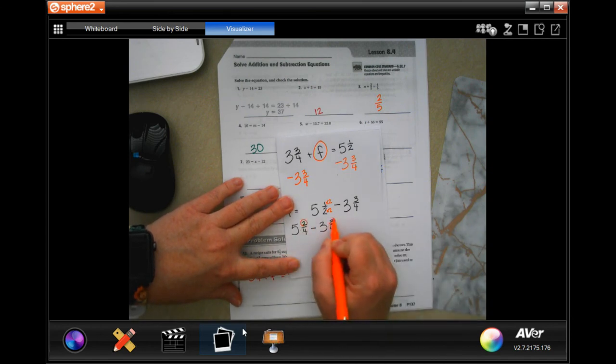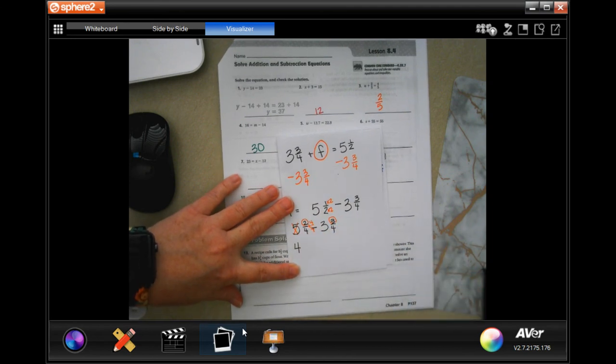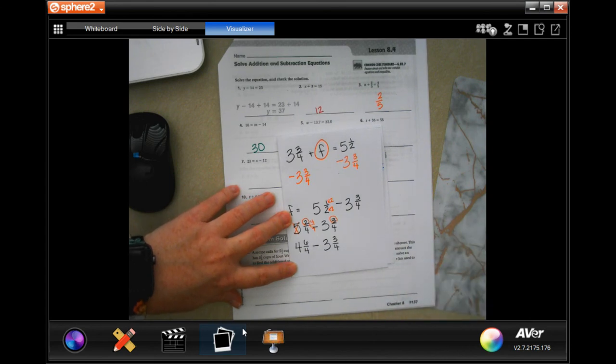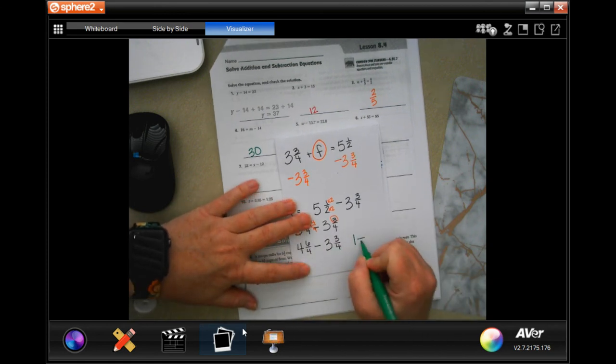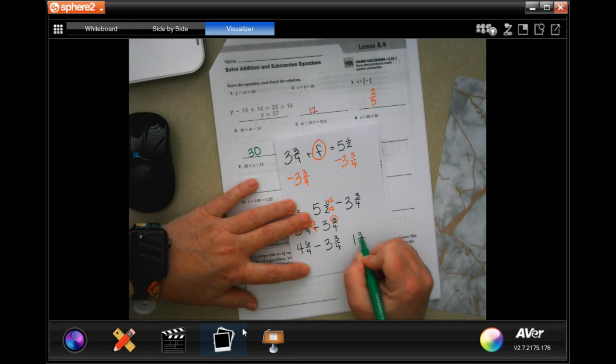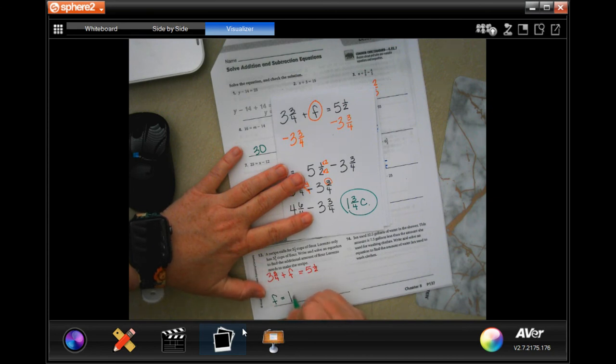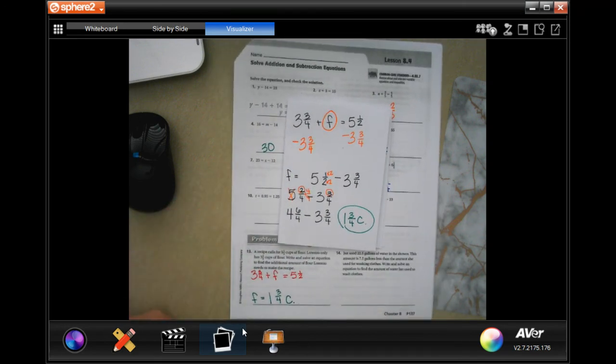Now, 2 cannot take away 3, so I need to borrow one. Now I have 4, and I'm going to add on a 4 over 4 because that's equal to the one that I borrowed. Now I'm going to have 6 over 4 minus 3 and 3⁄4. 4 minus 3 is 1. My denominator stays the same, and 6 minus 3 is 3. F equals 1 and 3⁄4. Write your work down, guys. It's important.